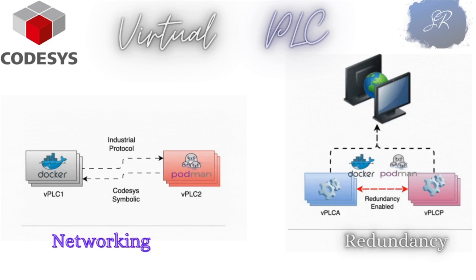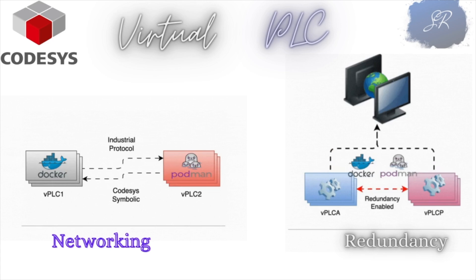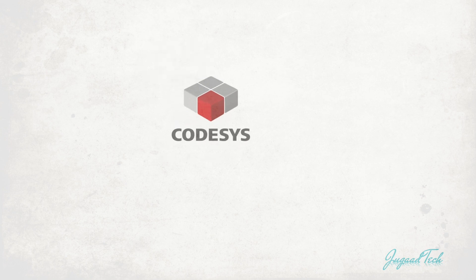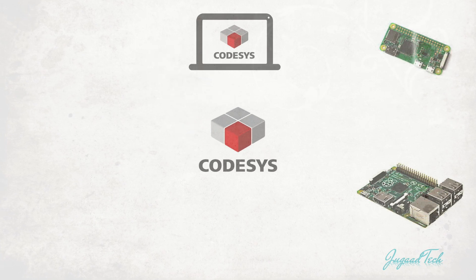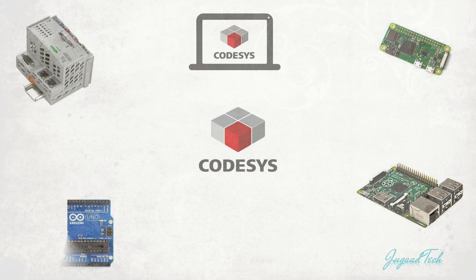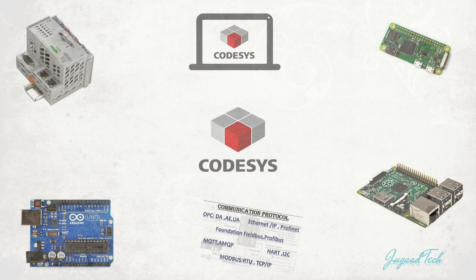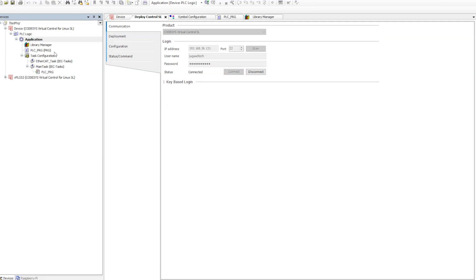Hello everyone, welcome back to the channel. Today I'm going to touch base on two topics. The first is redundancy — how exactly redundancy is configured in CODESYS and what networking configuration we need to do to make redundancy work for the virtual PLC. I will also touch on the networking part — how we can bring different devices and have different virtual PLCs communicate with each other. Let's get started with redundancy first.